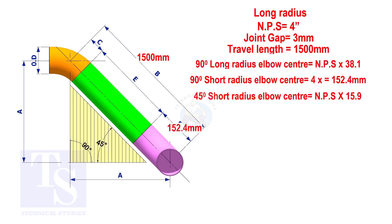To calculate the elbow center of a 45 degree long radius elbow, multiply the nominal pipe size by 15.9. The answer is 63.6mm.